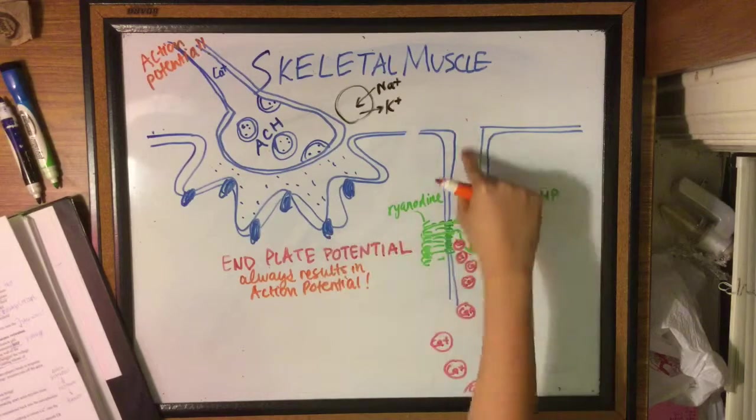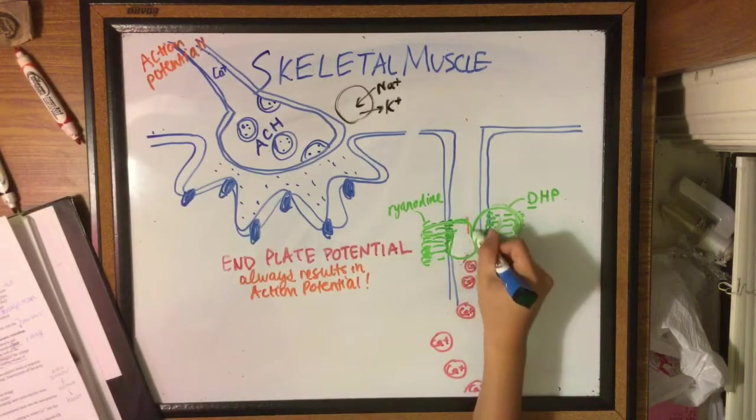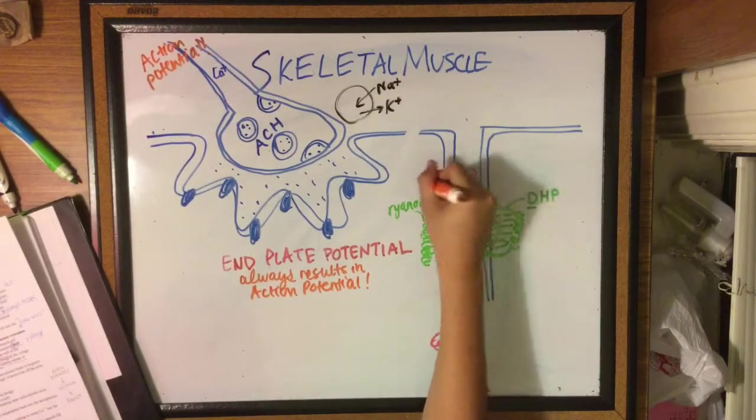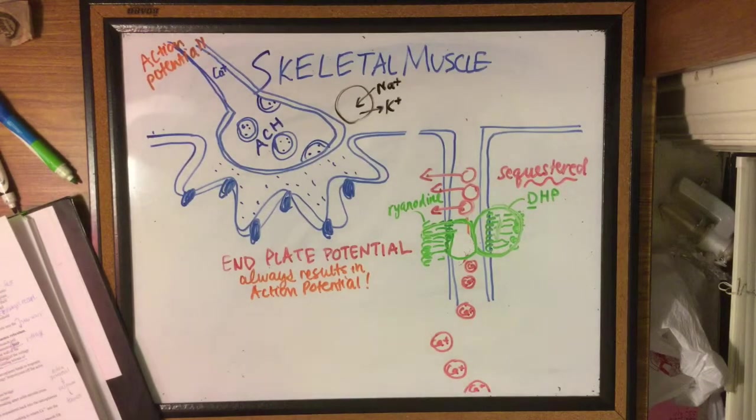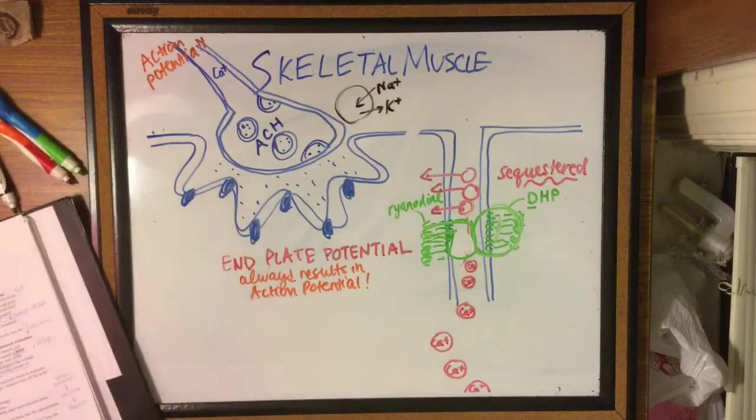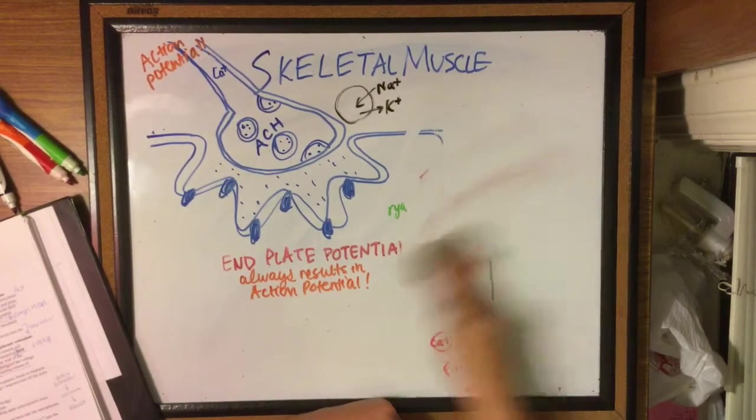As you can see, there's no more action potentials, and so calcium will be sequestered back into the smooth ER by calcium ATPase pump. With calcium going back to its normal levels in the cytoplasm, tropomyosin returns to its blocking position and this whole cycle begins all over again.